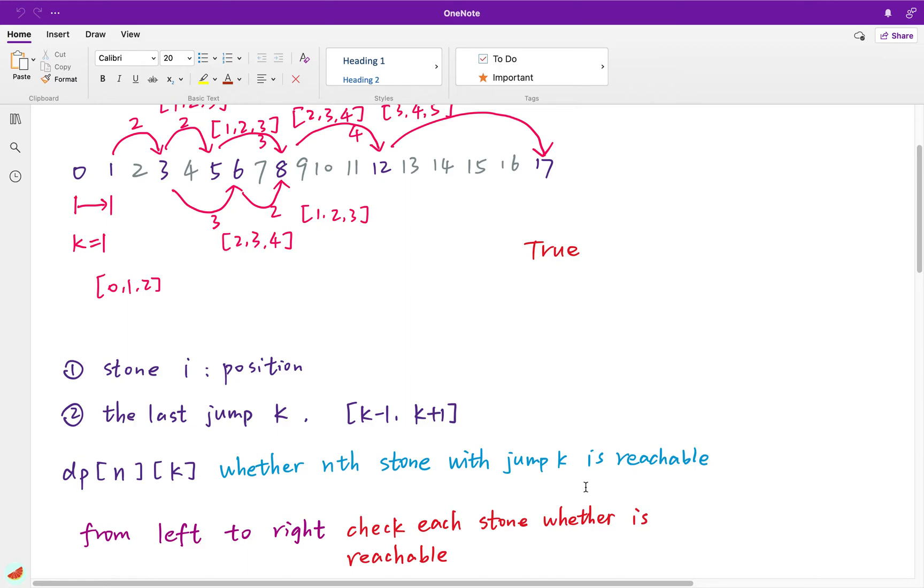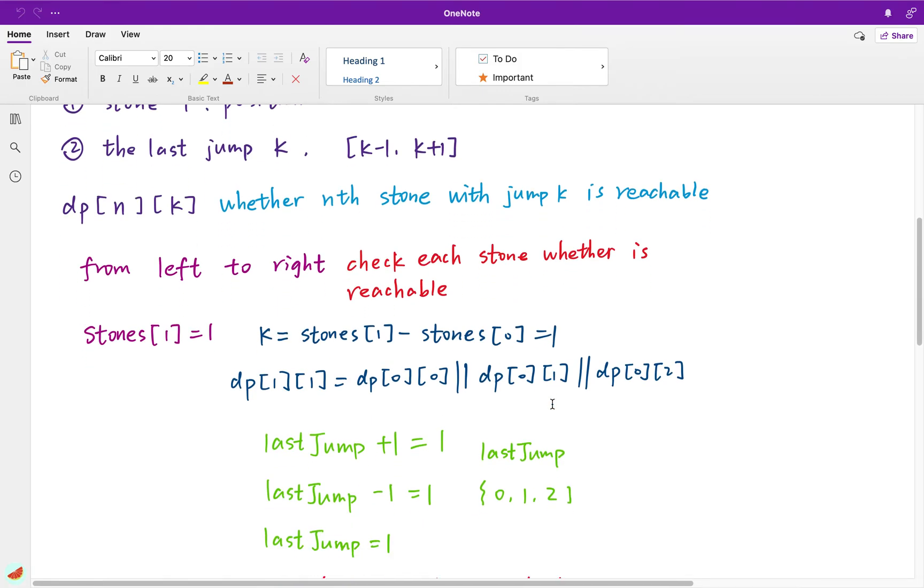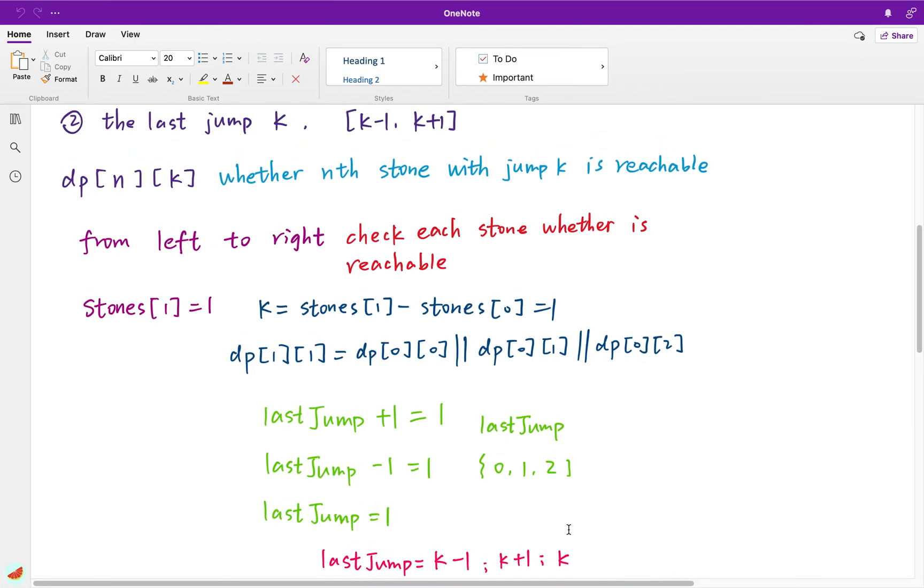So if we want to get information, then we must know the previous stone and the last jump. If we know the current jump is k, what is the last jump? Last jump can be k-1, k, and k+1.